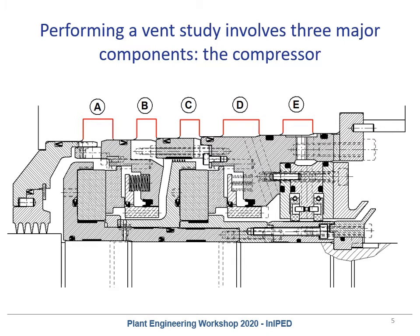Now that we've considered the seal, we need to move on to the compressor. As a seal manufacturer I unfortunately don't have a good cross-sectional drawing of a compressor, but I'd like you to imagine the restrictions caused by the compressor. The ones relevant to the vent study arise from the annuli here. Ports A, B, C, D, and E all have some sort of drilling through the compressor end wall, and you need to take that drilling and the restriction it provides into account.